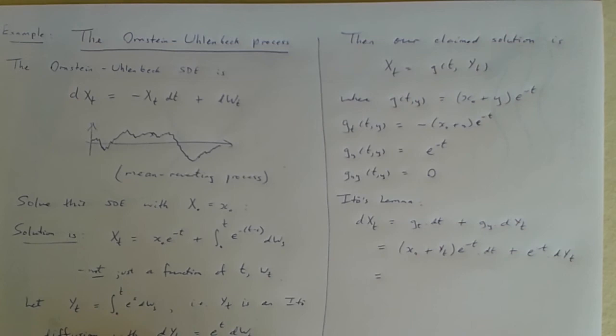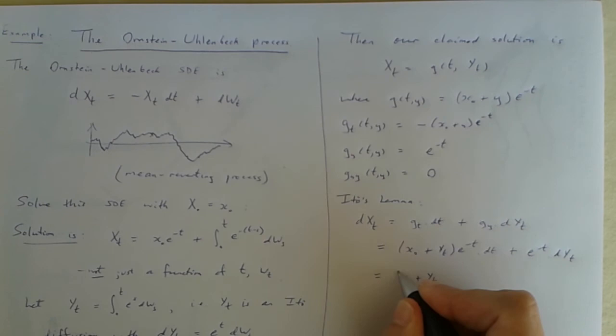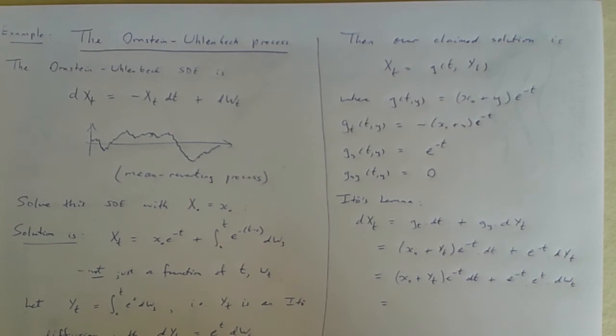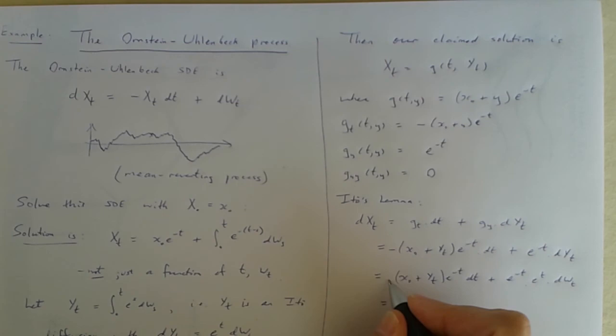Okay and dyt well we can substitute in for what that is from over here. yt is e to the t dwt. Sorry I left out a minus sign when I was doing this the first term should have a minus sign in it.